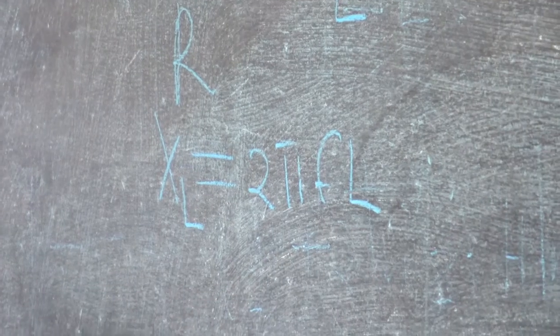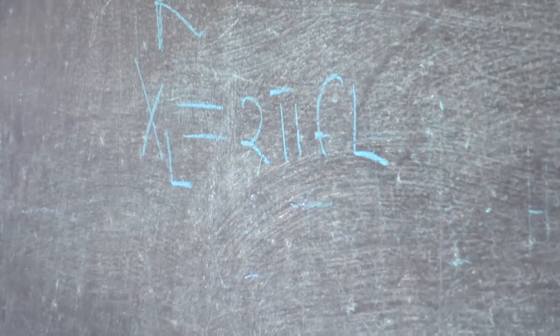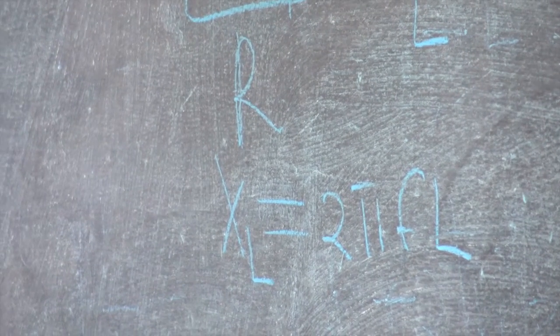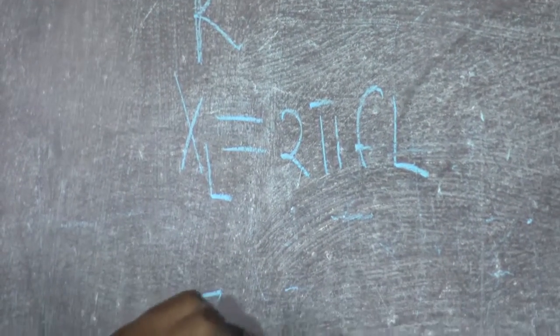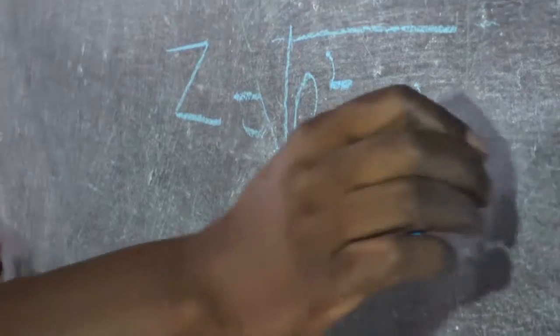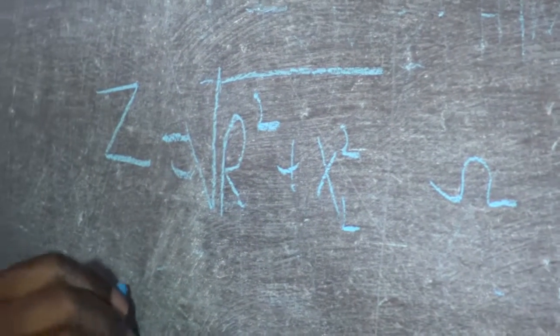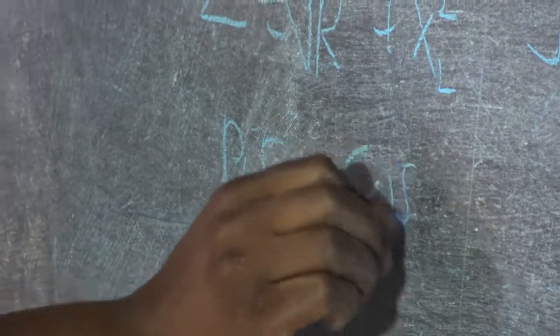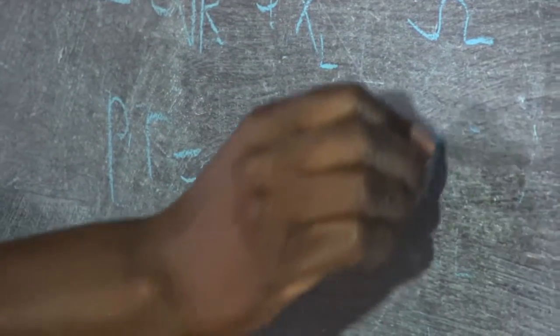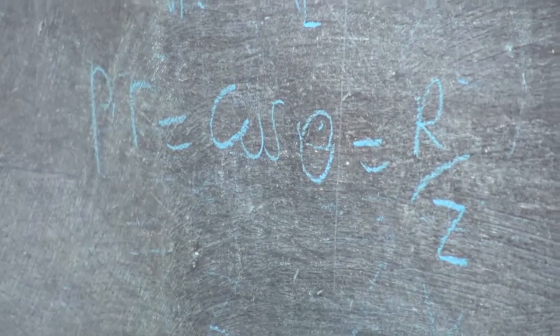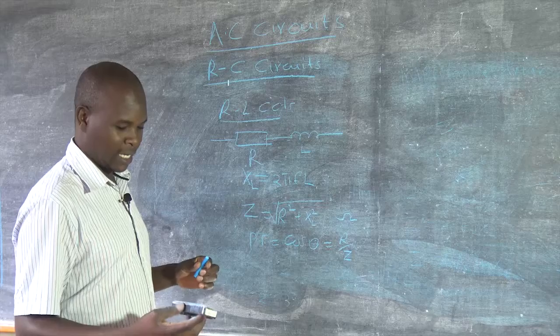F is the frequency. And the frequency in the Kenyan system, it is standard 50 Hz, unless otherwise specified. And we say that impedance is given by R squared plus XL squared square root ohms. And again we say the power factor was given by cos theta or R over Z. That's all about what we discussed last time.